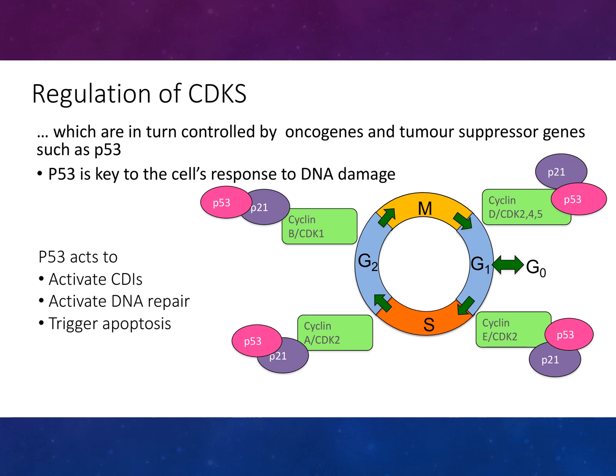These are also controlled by oncogenes and tumour suppressor genes such as P53. A key point about P53 is that it is the cell's key response to DNA damage — it activates cyclin-dependent inhibitors, activates DNA repair, and triggers apoptosis.